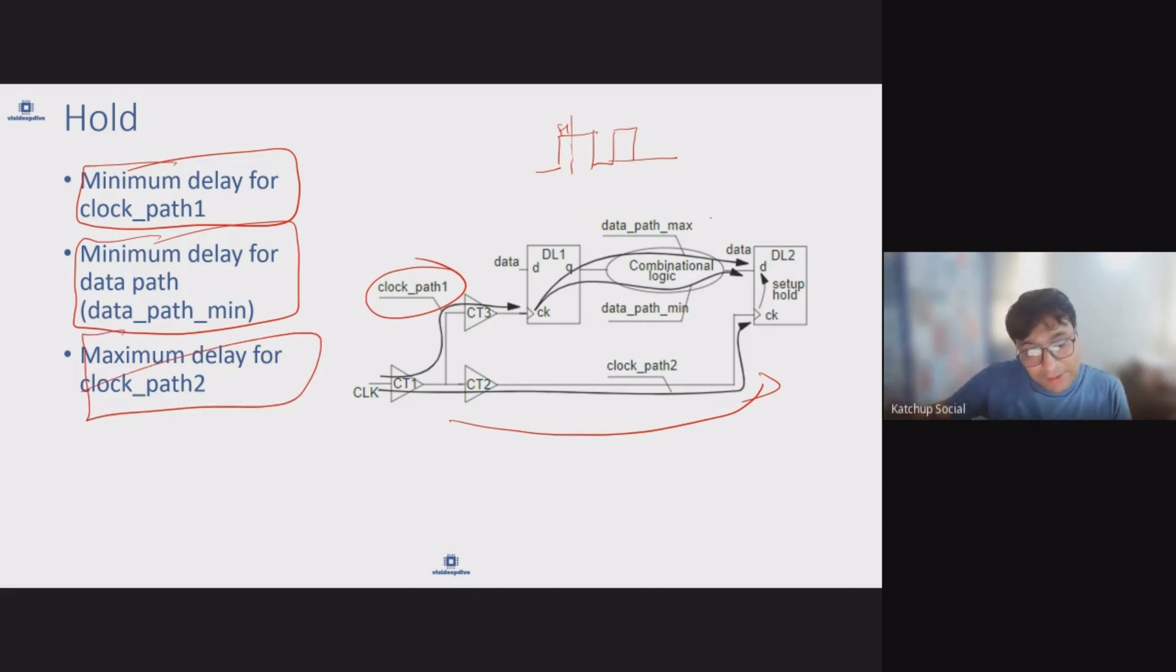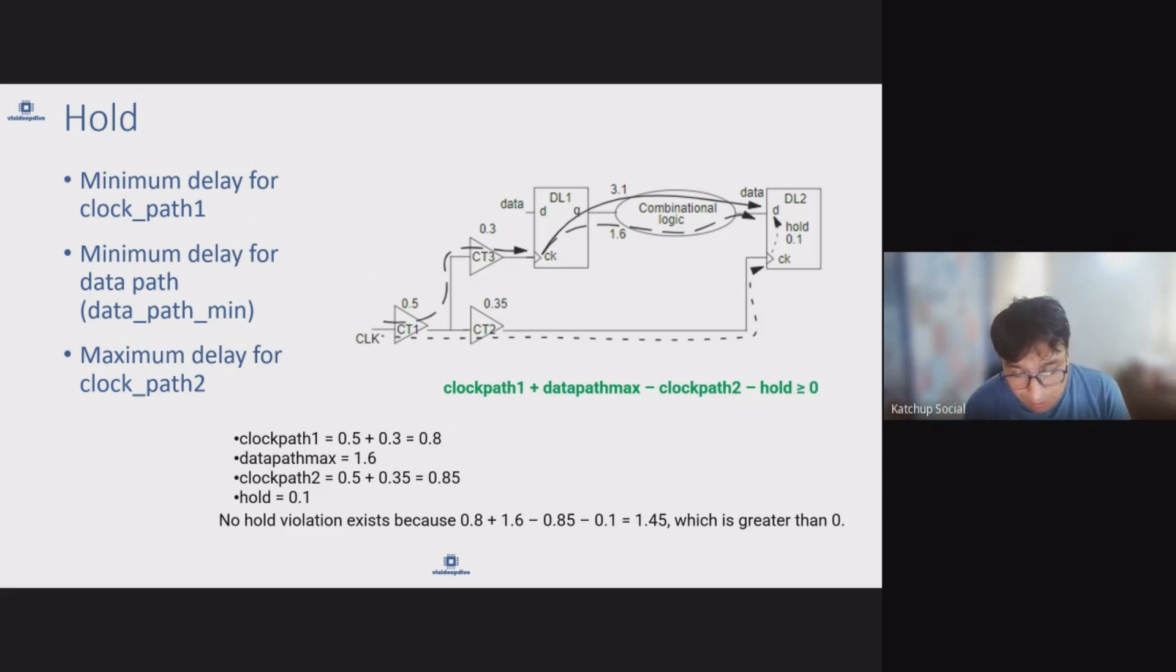Let's understand this using an example. On this there is this clock path delay, there is this data delay of 3.1 and 1.6. So for clock path one this is 0.8. For data path, which delay will we pick? We'll pick the minimum delay which is 1.6. And for clock path, constant delay and this is the hold value we'll pick. So no hold violation exists because this is greater than zero.